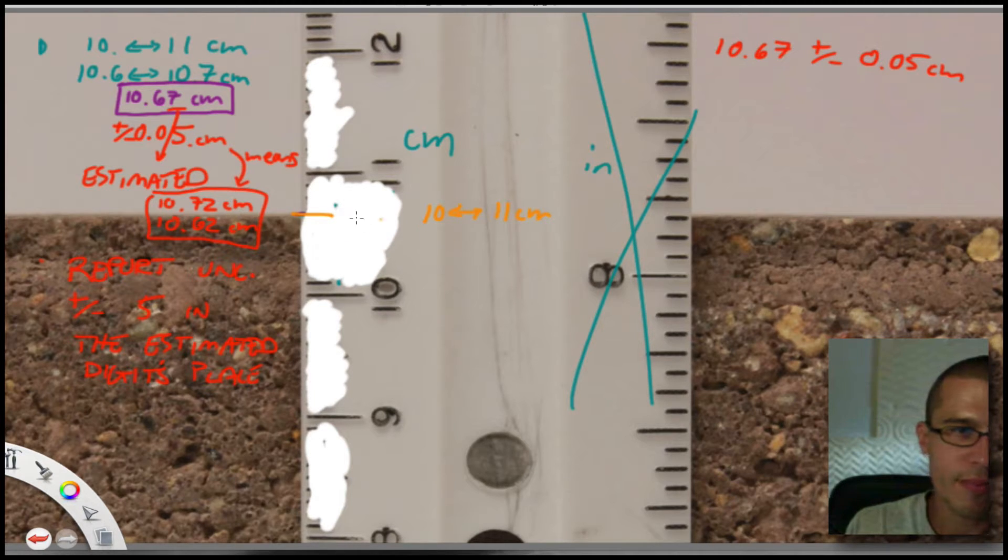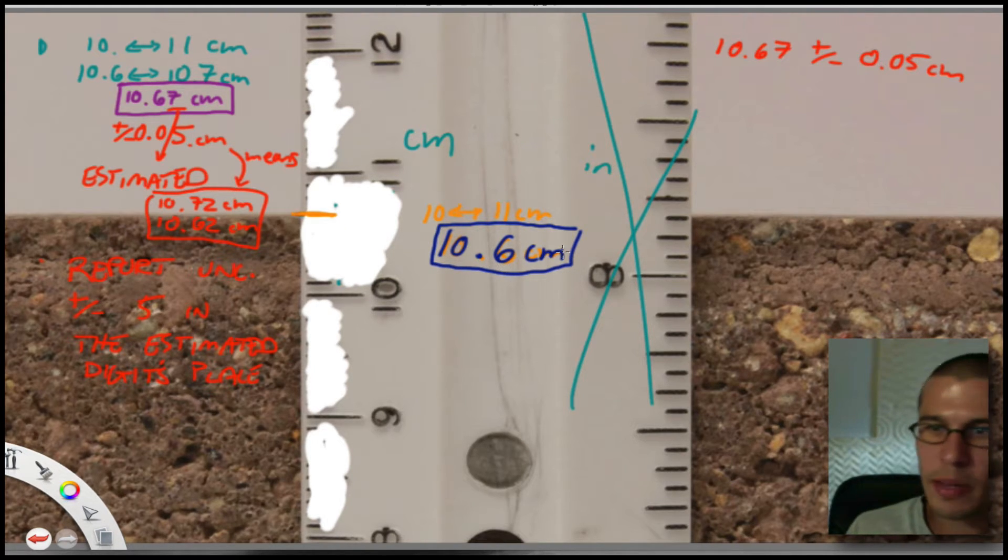So I just estimate, maybe it's 10.6, maybe it's 10.7, I don't know. So I estimate now, I just estimate that this comes up to, I don't know, 10.6 centimeters. That's my estimation. Let me use a darker color here, 10.6 centimeters. That's my estimation, because I don't have those little tick marks to tell me anything else. I just have 10 and I just have 11. That's all I've got. So now in this last estimated digit, use the same rules we just use.